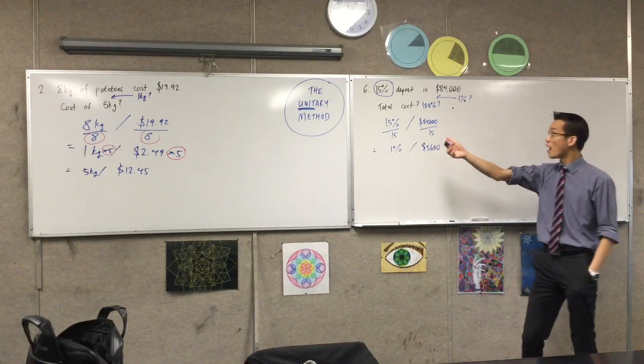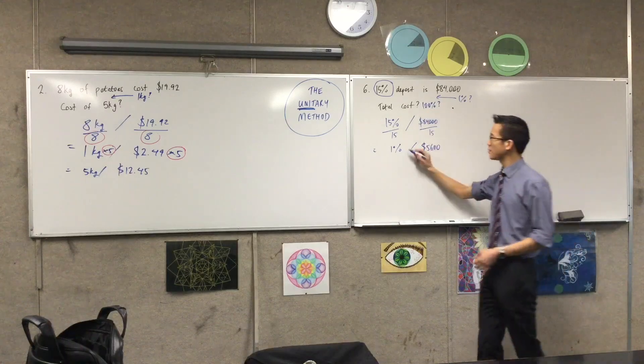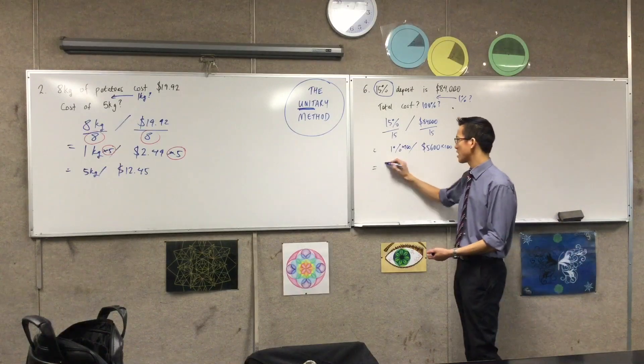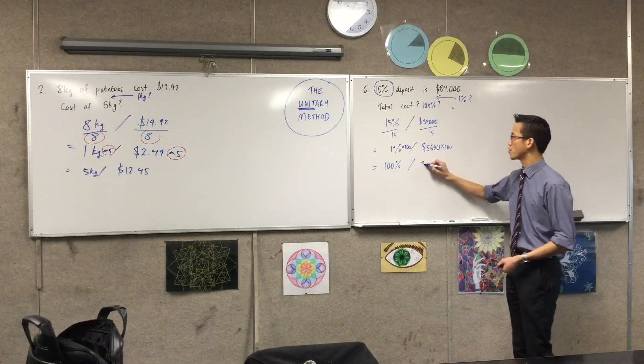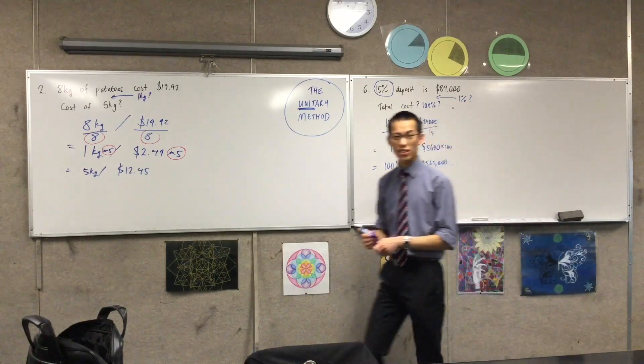And just like before, I want to go from that to this next step, which I've identified as 100%. So I'll multiply this one by 100, multiply this one by 100, and then you get a pretty simple calculation. You're going to add two zeros onto that. So you're getting 560,000. That's your total cost.